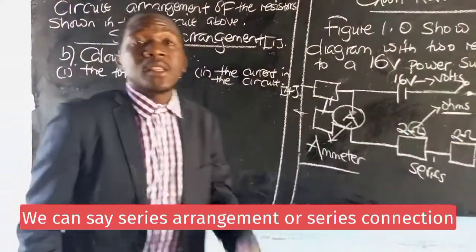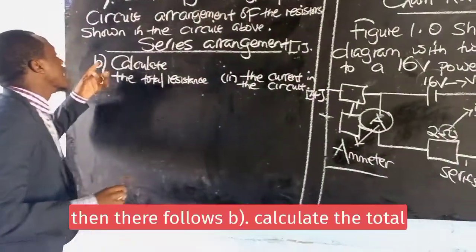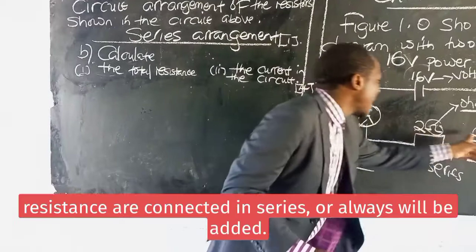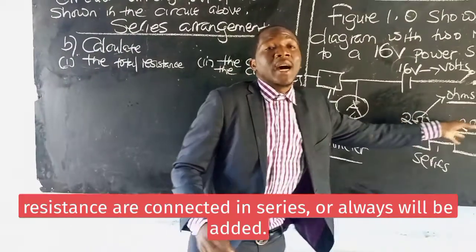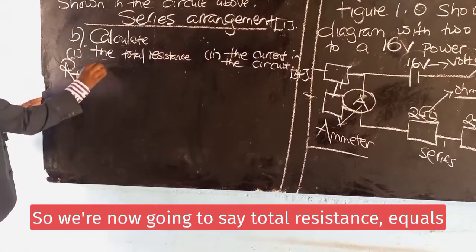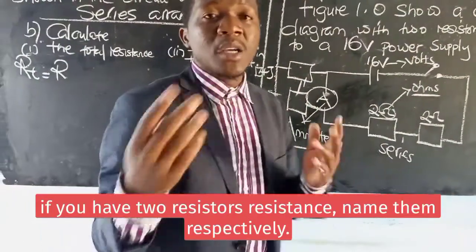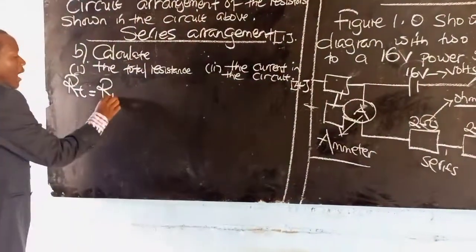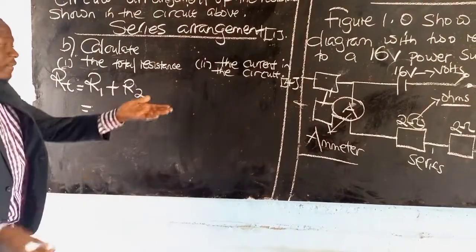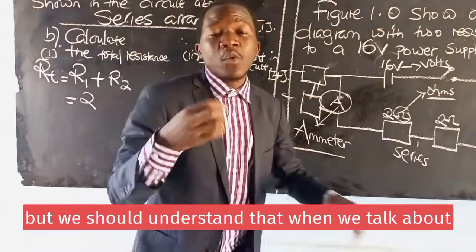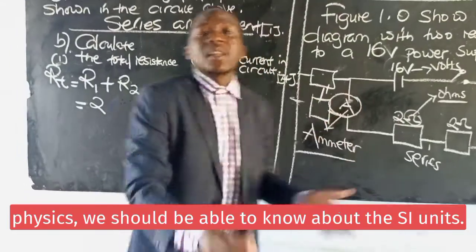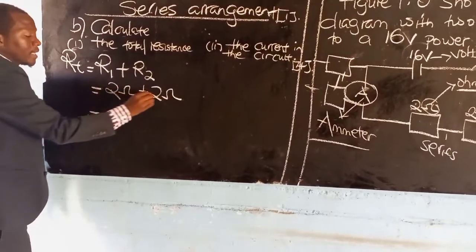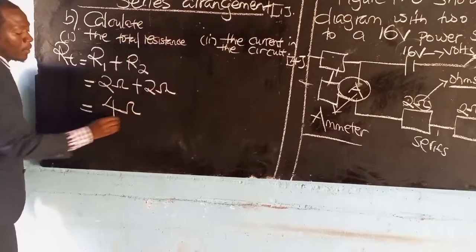So here we are going to say series arrangement or series connection. Then question B: calculate the total resistance. When resistors are connected in series, they are always added. So total resistance equals R1 plus R2. We are going to say 2 ohms plus 2 ohms. Then 2 plus 2 gives us 4 ohms.